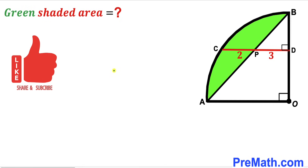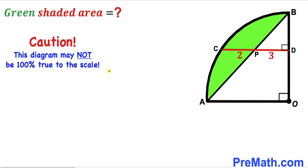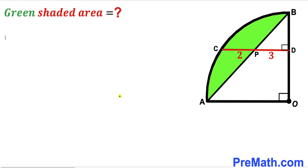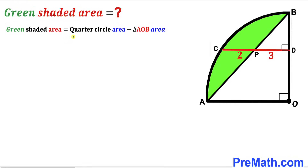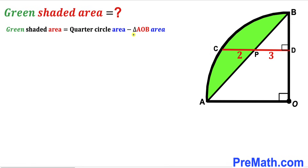Please don't forget to give a thumbs up and subscribe, and keep in mind that this figure may not be 100% true to scale. Now let's make an observation: the green shaded region area is going to be equal to the quarter circle area minus the area of triangle AOB — this right triangle AOB.